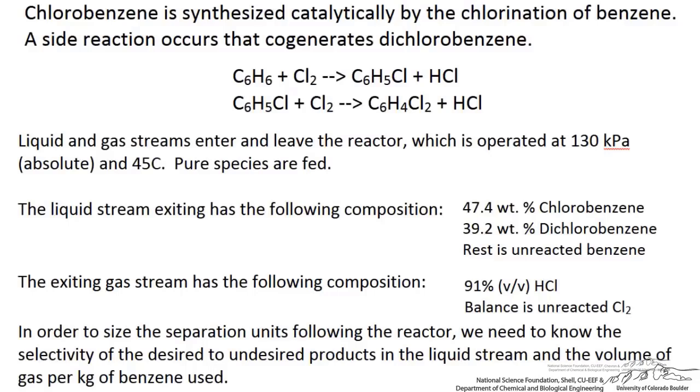In this screencast we will look at solving material balances for a two-phase reactor that has a desired reaction and an undesired side reaction. We are going to examine the process of making chlorobenzene, which is commonly used as an intermediate compound in the manufacturing of herbicides and rubber, as well as being a common high-boiling solvent used in industry and labs.